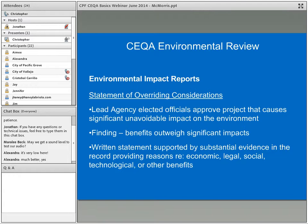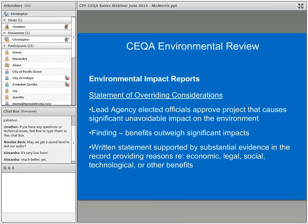Projects that have an impact on the environment, including the demolition of historical resources, can still happen through a statement of overriding considerations. This is when lead agencies — elected officials — approve a project that causes a significant unavoidable impact and agree on findings that the benefits outweigh the significant impacts. The findings need to be a written statement supported by substantial evidence, providing reasons for economic, legal, social, or technological benefits. This is crucial in terms of the political support that preservation would have.